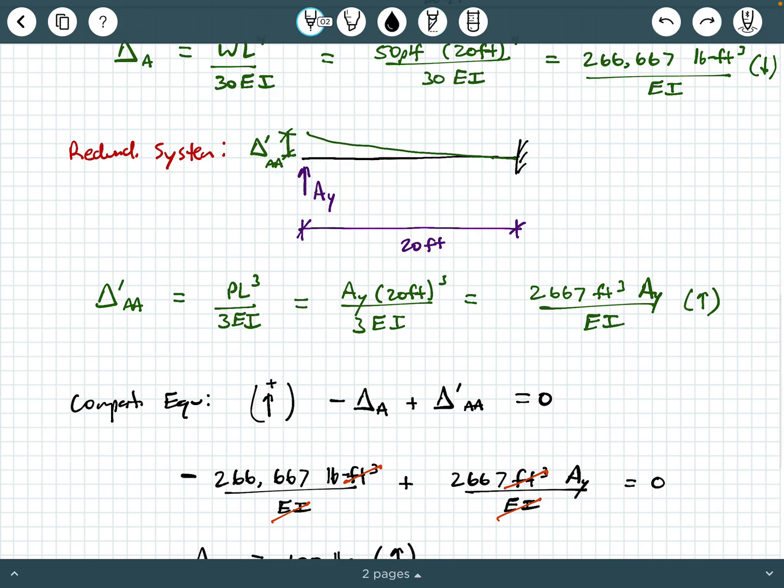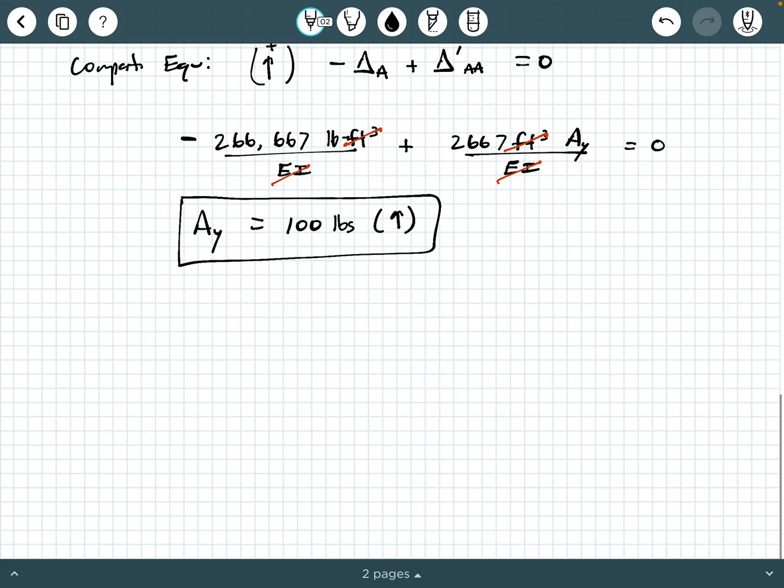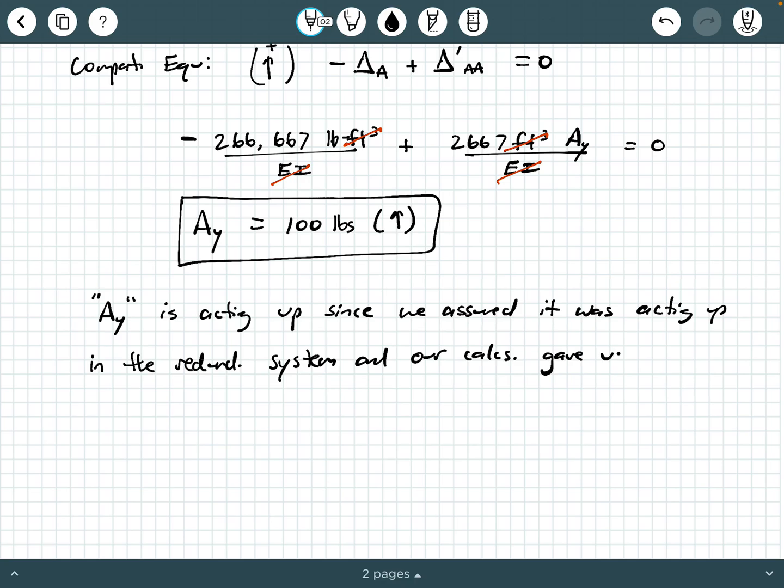So that is our answer, but we need to make sure we understand why this is our answer and how it works. So let's make a couple of notes and observations here. AY is acting up since we assumed it was acting up in the redundant system. And our calcs gave us a positive value. If our calcs came out negative, then AY would have actually been reacting downwards.